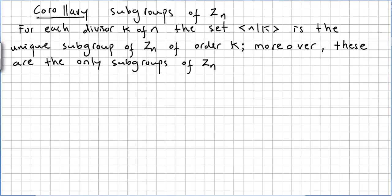A corollary of the previous theorem is this one about the subgroups of Z_n. For each divisor K of N, the set ⟨N/K⟩ is the unique subgroup of Z_n of order K. Moreover, these are the only subgroups of Z_n.